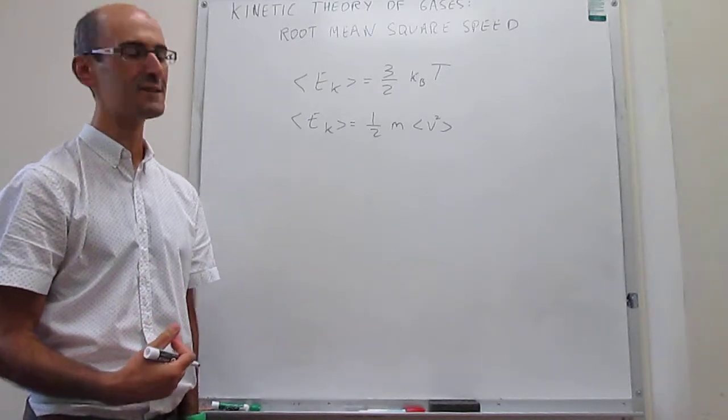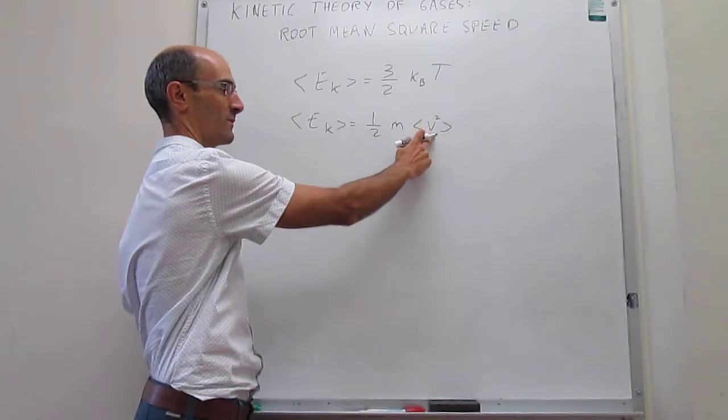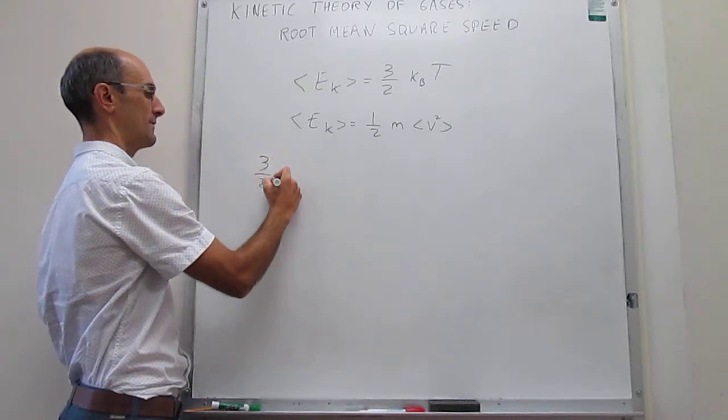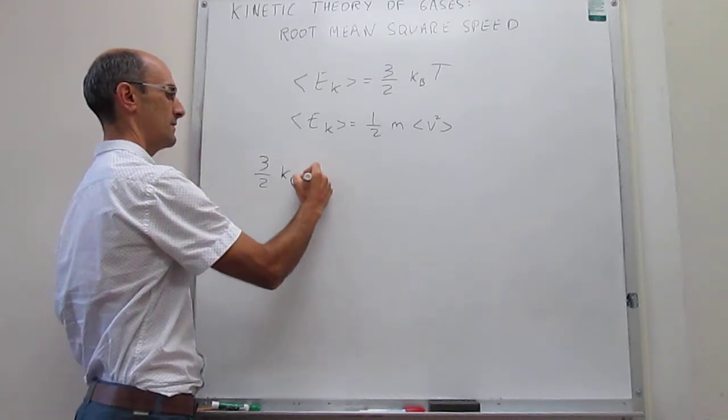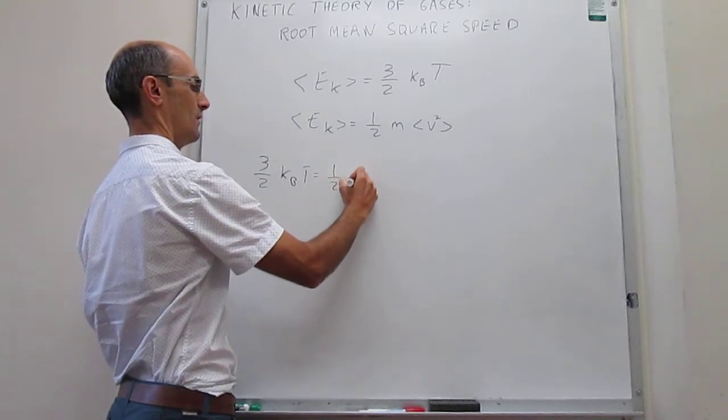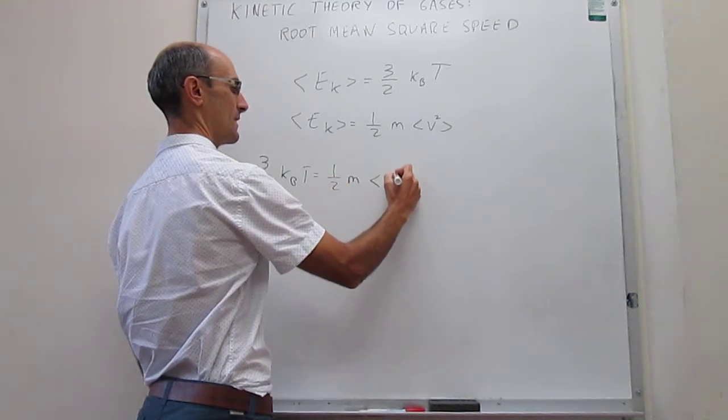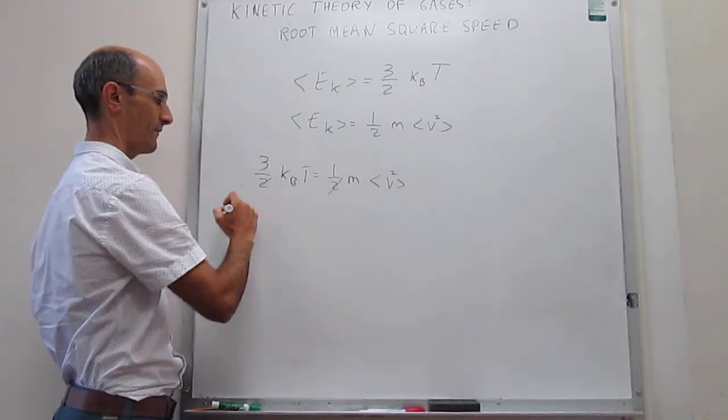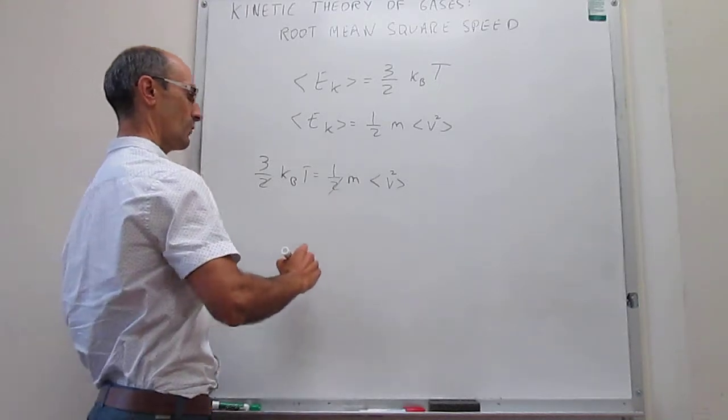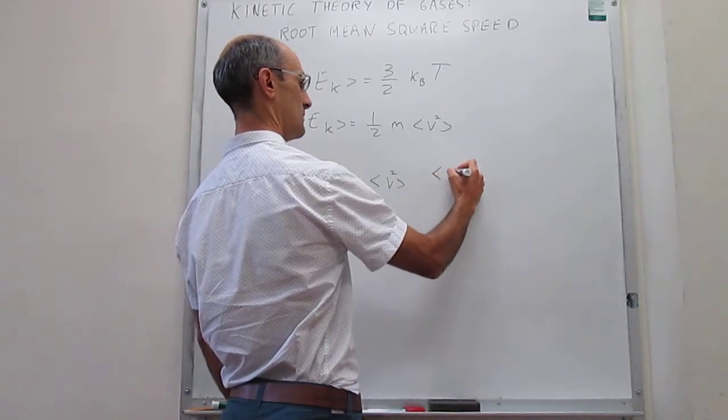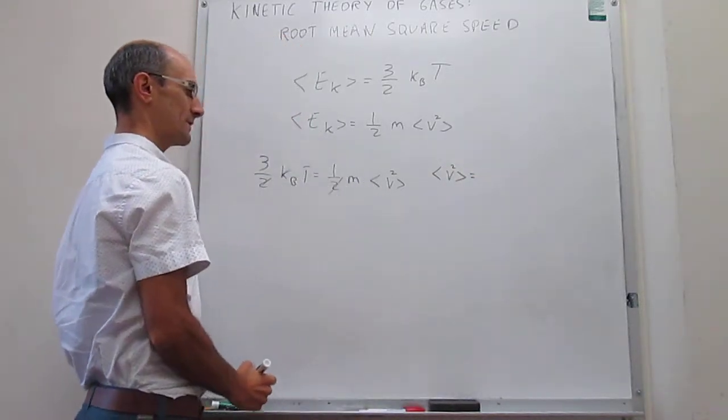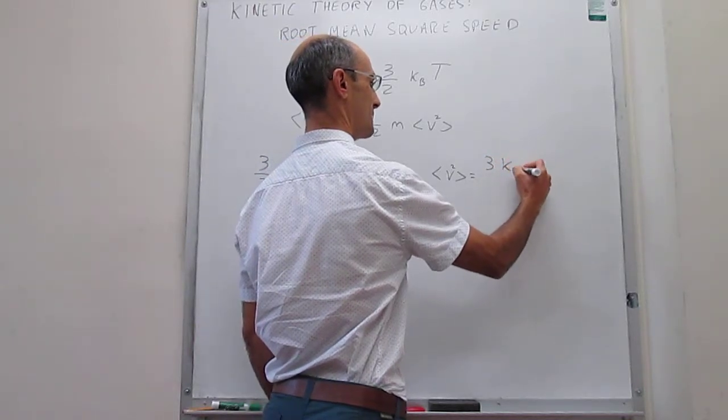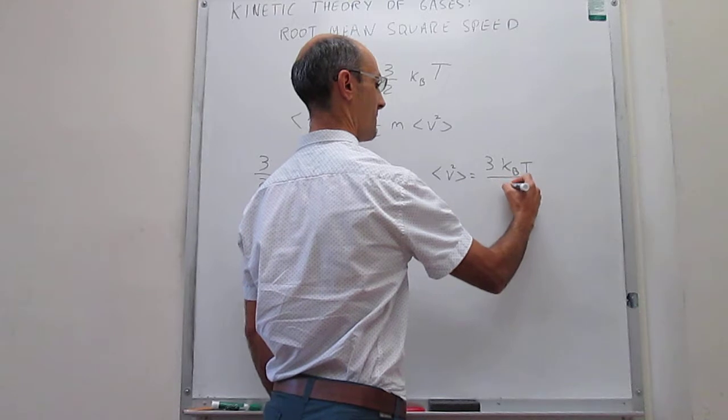To find an expression for the velocity we're simply going to equate these two and solve for the velocity, which is going to be straightforward. So three-halves K sub B T has to be equal to one-half mass of the particle times the average of the velocity squared. This one-half cancels with that one-half and we come to an expression: velocity squared is going to be equal to three K sub B T over the mass.